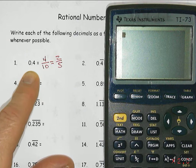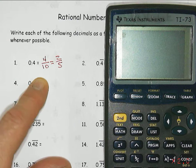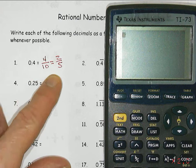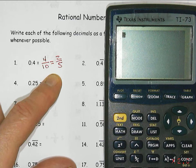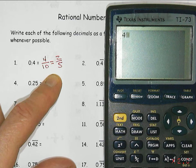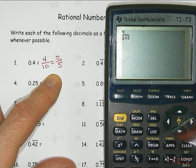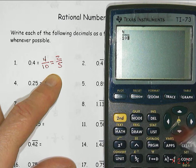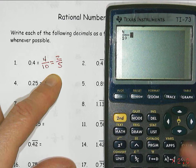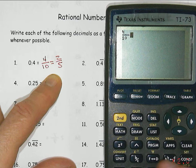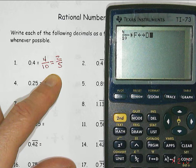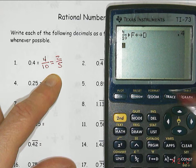So 0.4 is a pretty simple decimal, four tenths, written as a fraction, but it simplifies to two fifths. If for some reason you didn't know that, you could put four tenths, there's a fraction key, the B over C key on your calculator, and then there's a fraction to decimal button, F to D or D to F, it goes either way. If I hit enter, it'll give me the decimal fraction back and forth.